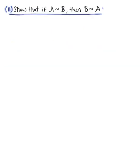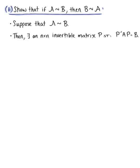To prove Property 2, we want to show that if matrix A is similar to matrix B, then matrix B is similar to matrix A. So let's suppose that matrix A is similar to matrix B. Then by definition, there exists an n by n invertible matrix P such that the inverse of P times A times P equals matrix B.